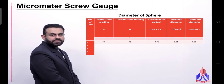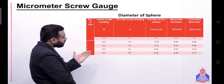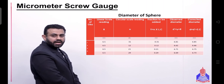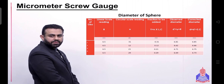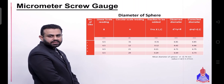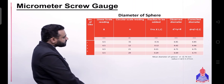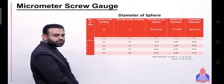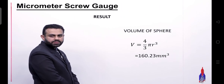We take four readings for the sphere, find the mean diameter, then divide by 2 to get the radius. Finally, we calculate the volume of the sphere using the formula V = (4/3)πr³.